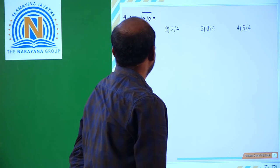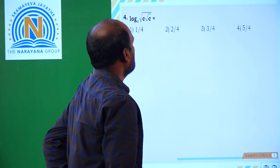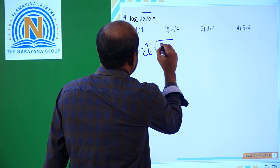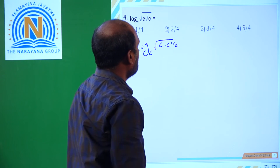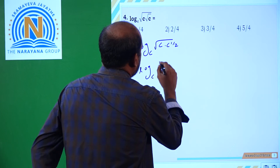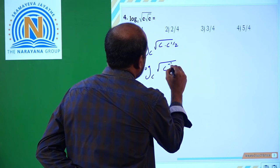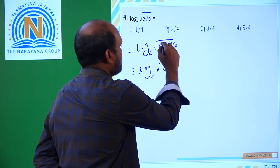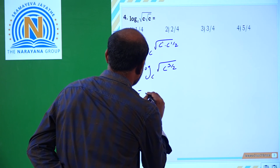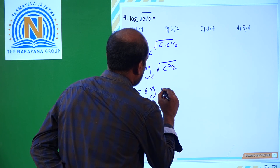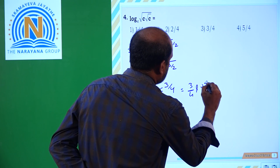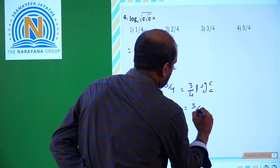Coming to the next one: log of root C over root C base C is equal to? This is log base C of square root of C, and the square root of C can be written as C power 1 by 2. Adding the powers — 1 plus 1 by 2 equals 3 by 2 — we get log of C power 3 by 2 base C. That becomes 3 by 2 multiplied by log C base C, which equals 3 by 4.